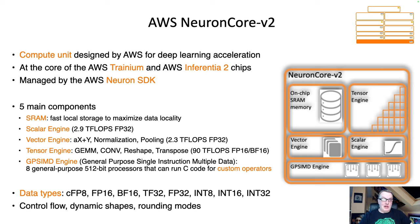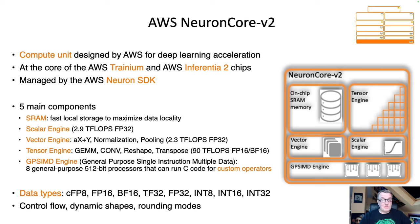In a nutshell, the Neuron Core V2 is a custom design by AWS. It powers both training and inference, has hardware support for acceleration across the board, supports multiple data types, and lets you run custom code through general-purpose processors. That's the Neuron Core V2.